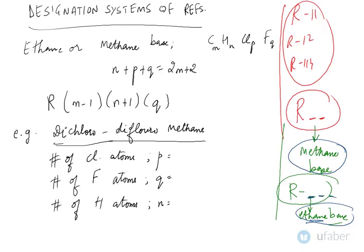In general, if we speak in general, the chemical formula for a refrigerant, whether it is methane or ethane base, is given as CMHN CLP FQ, where N, P, Q, and M follow this relation: N plus P plus Q equals 2M plus 2.